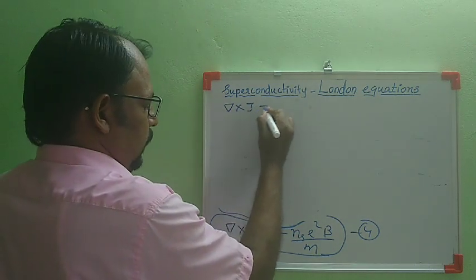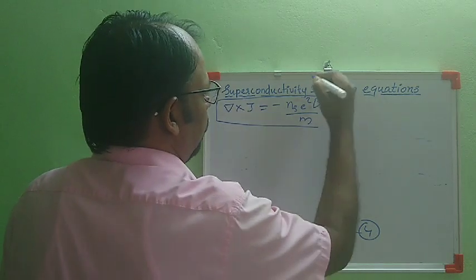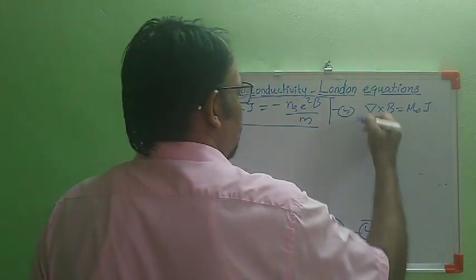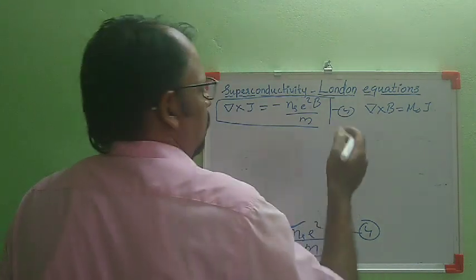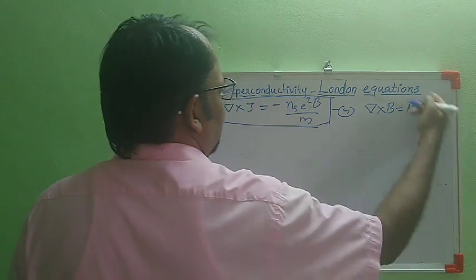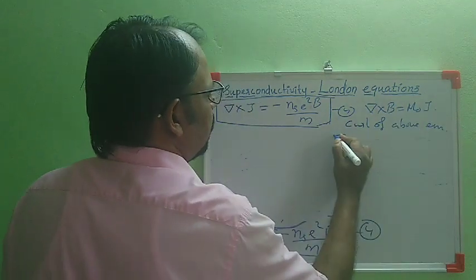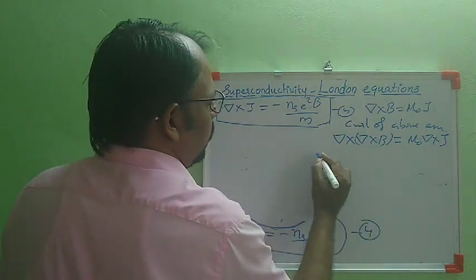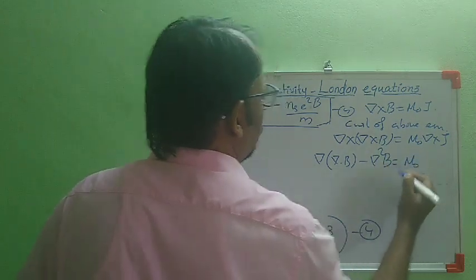We have the London equation del × J = -(Nse²/M)·B, and from Maxwell's equation, del × B = μ₀J. This equation can be represented in another form which can explain the Meissner effect. Taking the curl of Maxwell's equation: del × (del × B) = μ₀(del × J) = μ₀·(-(Nse²/M)·B). Using the vector identity del × (del × B) = del(del·B) - del²B, and from Maxwell's second equation del·B = 0, this simplifies to -del²B = -μ₀(Nse²/M)·B.